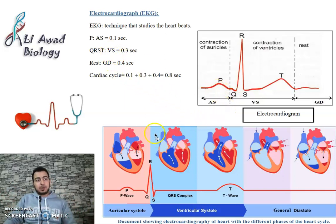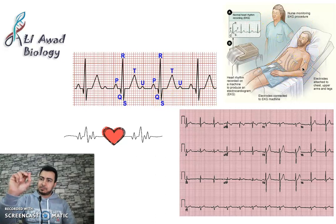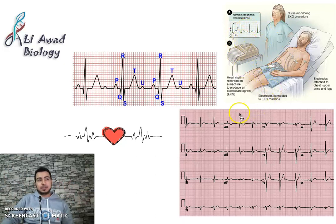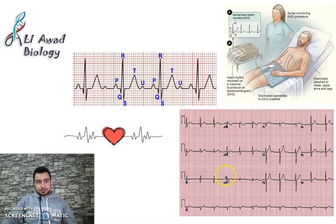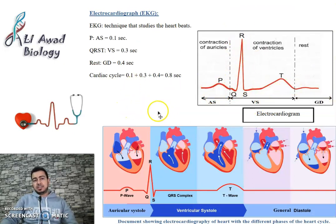For an EKG, small electrodes — like small clips or adhesive patches — are placed on the patient, as you can see in the image in front of you. These electrodes pick up electrical signals and send them to a system that draws the cardiac trace. What you see in front of you is a real cardiac trace. This is the EKG, or ECG — the electrocardiogram.